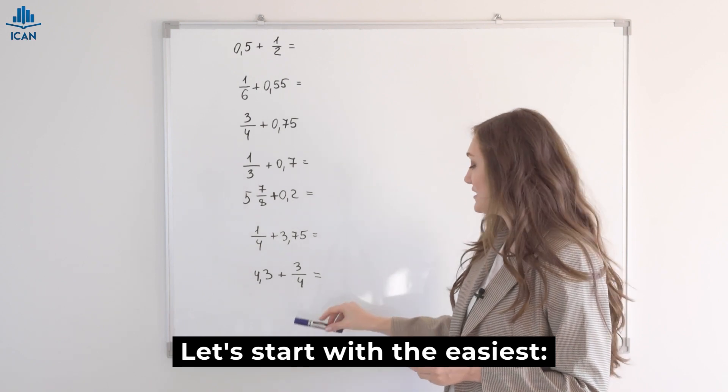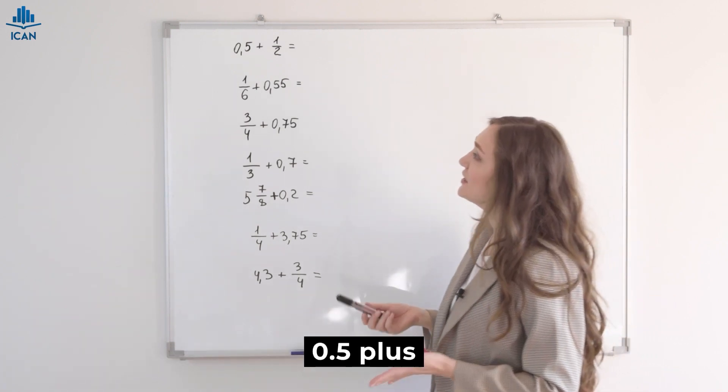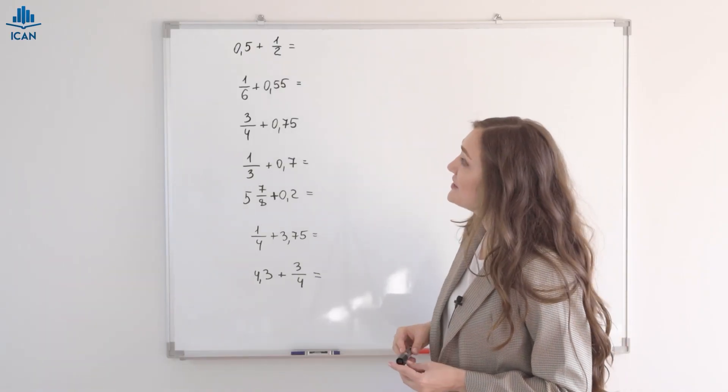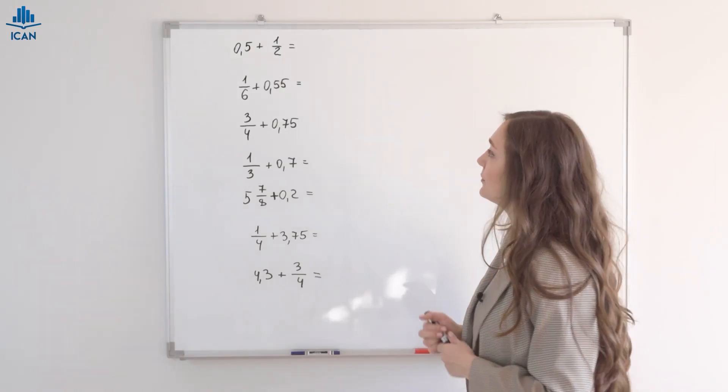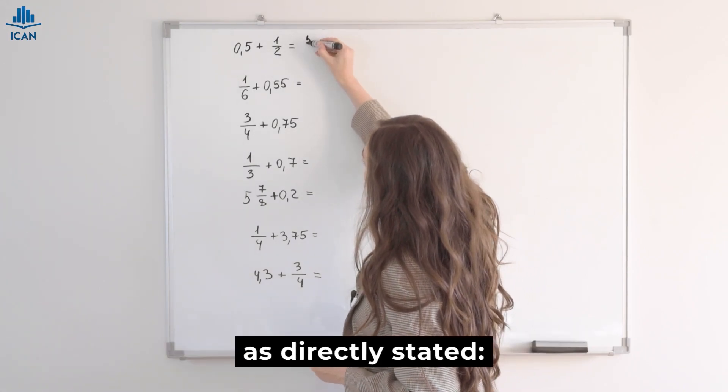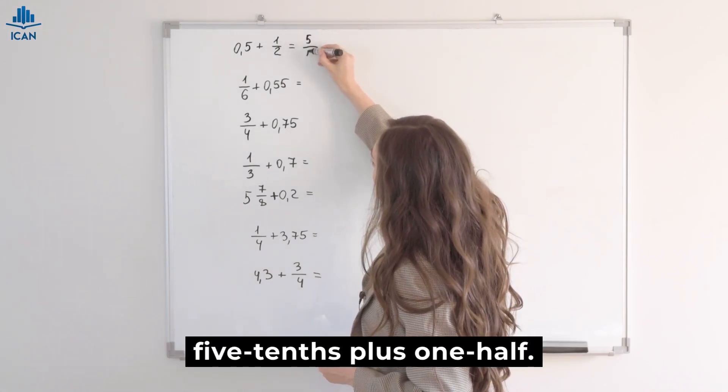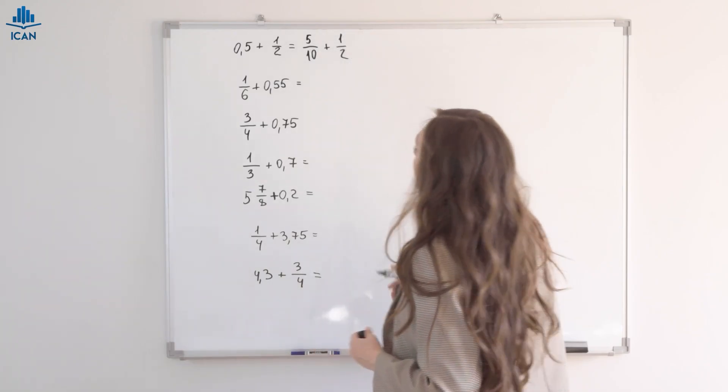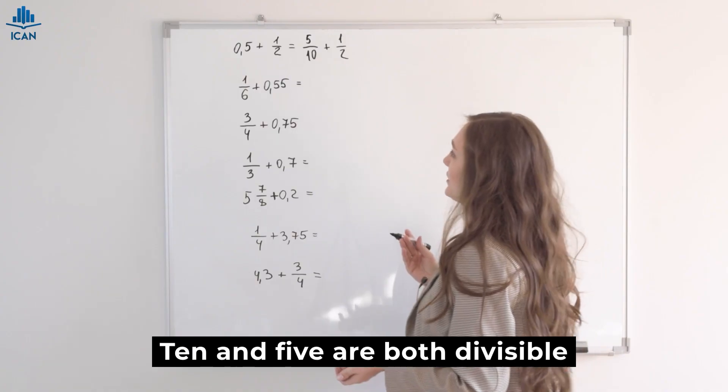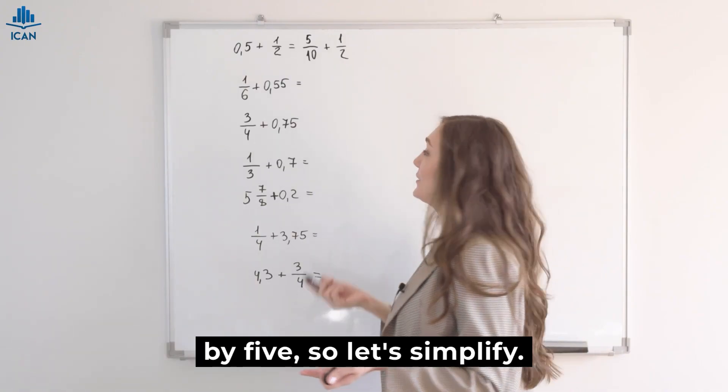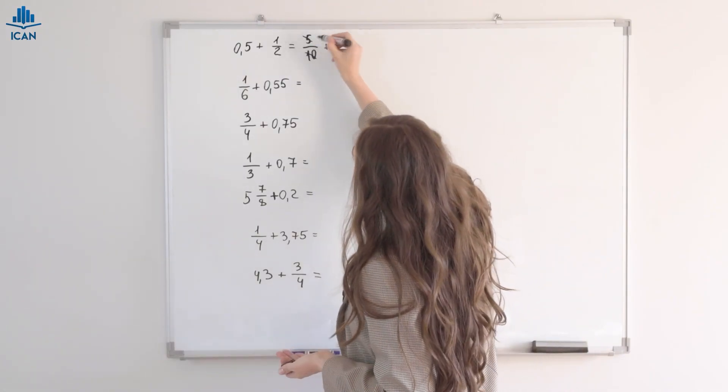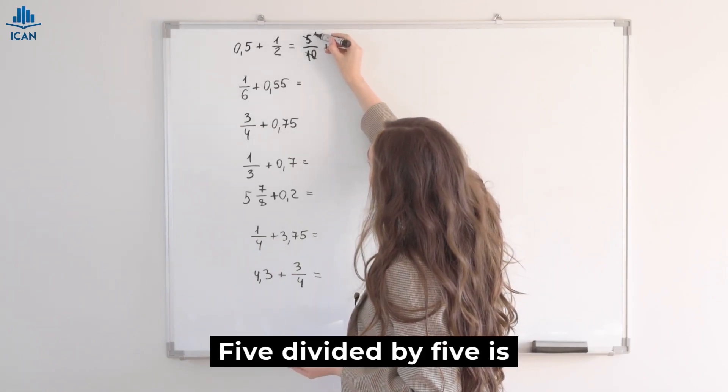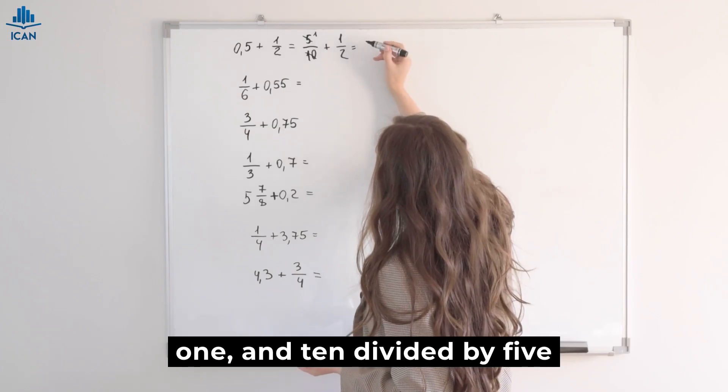Let's start with the easiest, 0.5 plus one-half. Let's convert 0.5 to a fraction. It can be written as five-tenths, as directly stated, five-tenths plus one-half. Ten and five are both divisible by five, so let's simplify. Five divided by five is one, and ten divided by five is two.